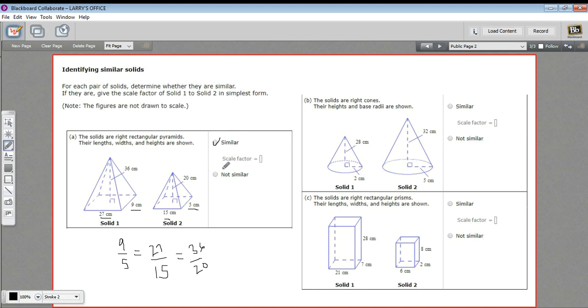And the scale factor here is just this first ratio that I picked, the simplest fraction we can have here of this ratio. It's nine fifths. All right, let's try B.